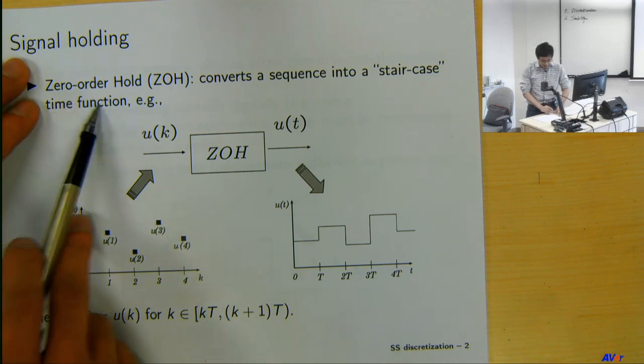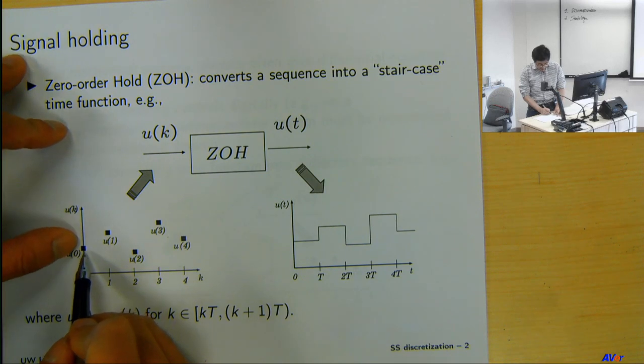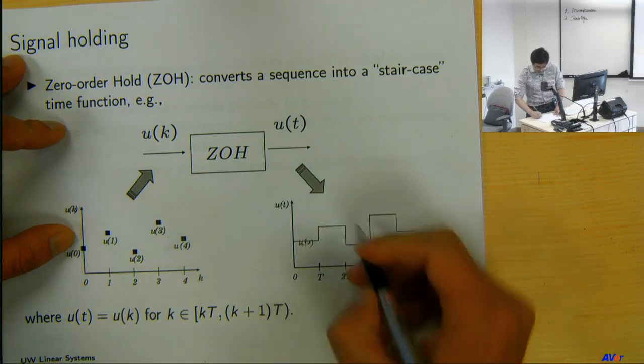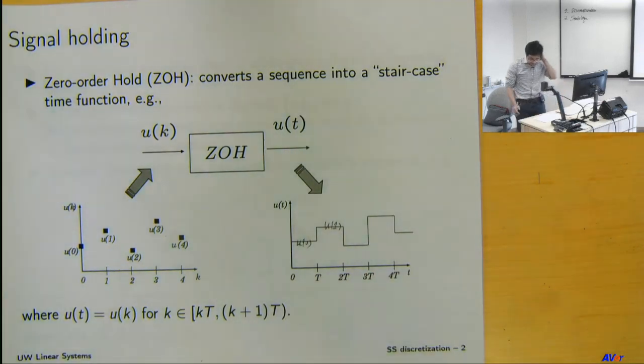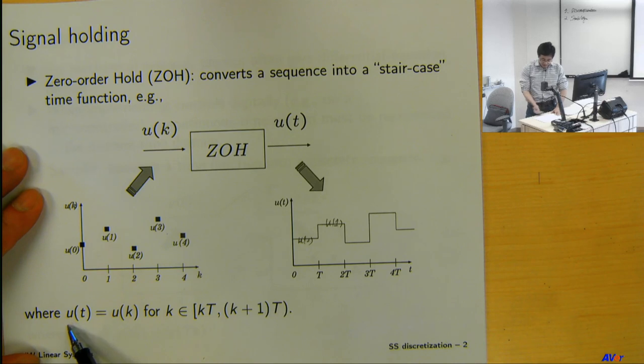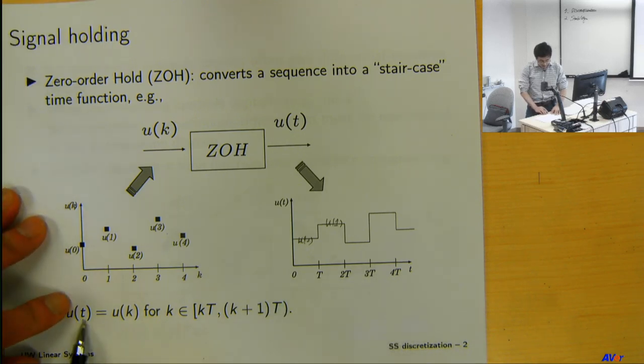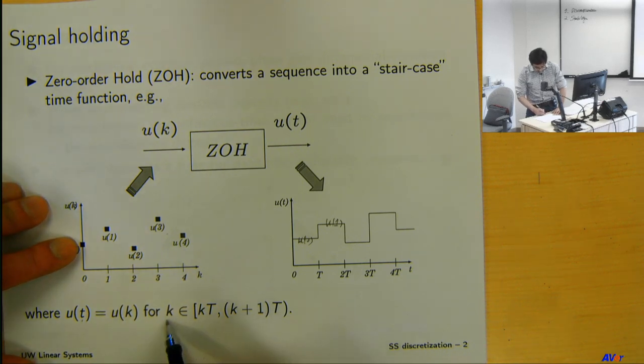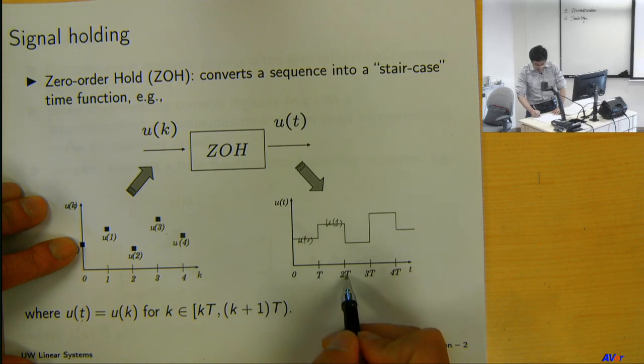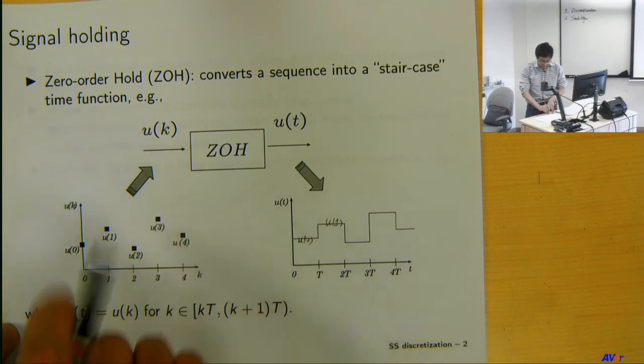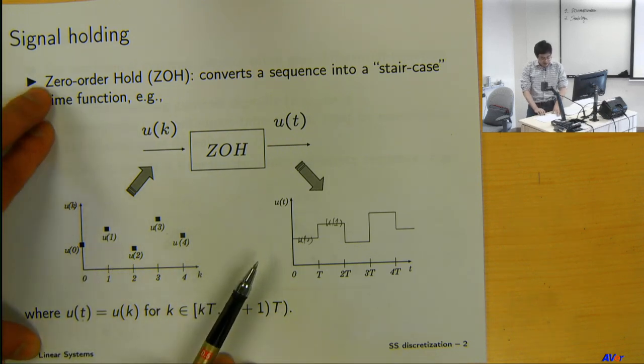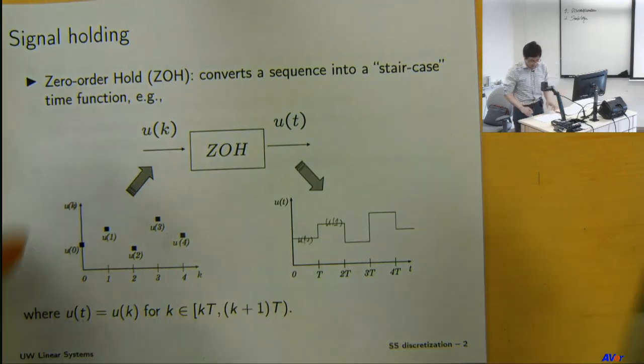So then we have this signal holding. Most typically for us right now is zero order hold. It holds the signal in between the sampling instances. Mathematically, you can write it as u(t), this continuous time signal, equals to the u(k), this discrete time instance value for the range when k is between two sampling instances, kT and (k+1)T. That's the concept of zero order hold. There are first order or higher order holds, but we won't be talking about those for this class.